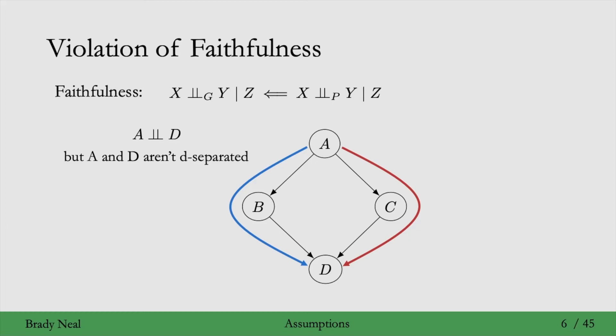If faithfulness were true, we would have that a and d are independent, which then implies that a and d are d-separated. That's what we would have if faithfulness were true, if it weren't violated. But in this example, it is violated.